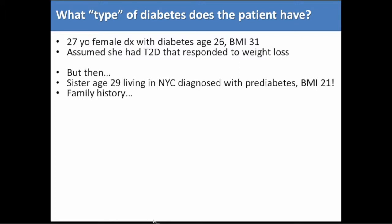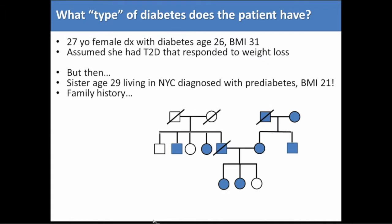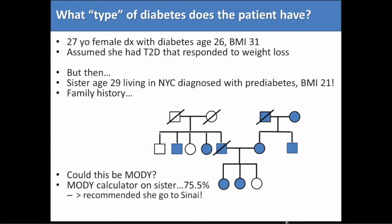But then her sister, who's 29 years old and living in New York, was diagnosed with pre-diabetes and had a BMI of 21 — kind of unusual. Talking more about the family history, it turned out there was a lot of diabetes in the family: both her parents had diabetes, her father died of cancer in his 40s, and there were multiple other relatives with diabetes. I used the MODY calculator on her sister — her sister came out at 75.5%. She was living in New York so I recommended she go to Mount Sinai, and she saw Dr. Kadeem Cheesman. Genetic testing showed a variant of uncertain significance in HNF1-alpha and HNF4-alpha.